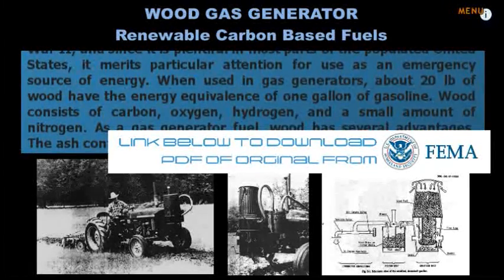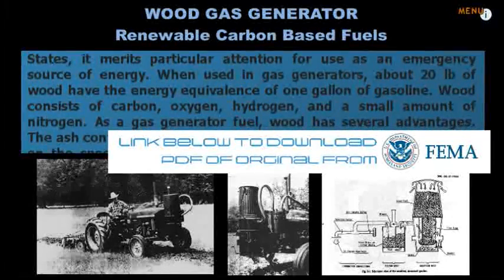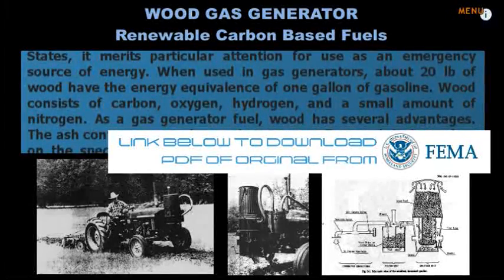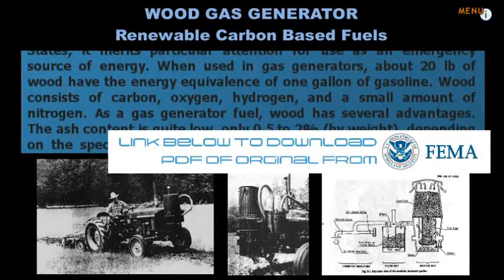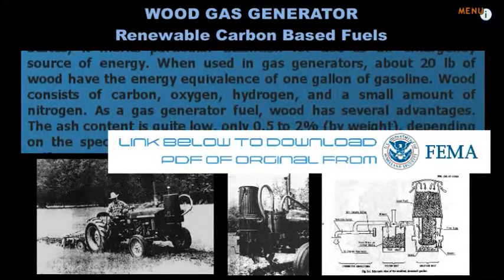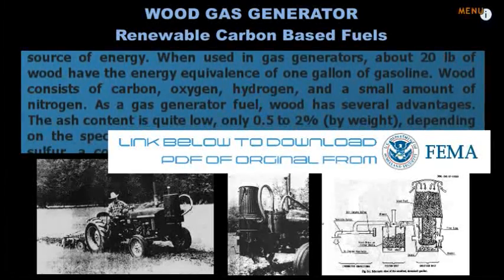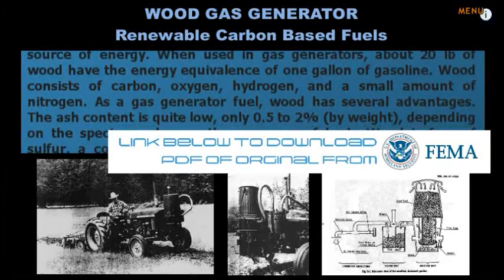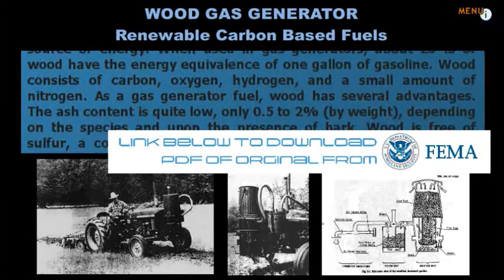When used in gas generators, about 20 pounds of wood have the energy equivalence of one gallon of gasoline. Wood consists of carbon, oxygen, hydrogen, and a small amount of nitrogen.